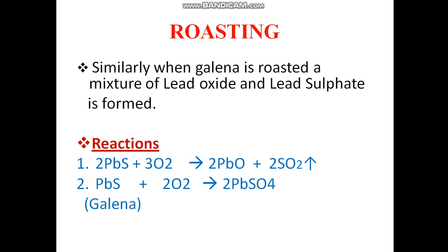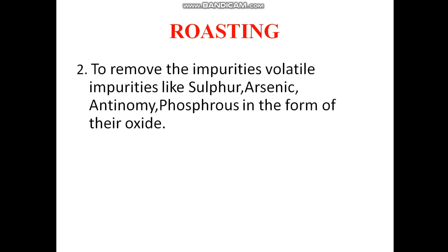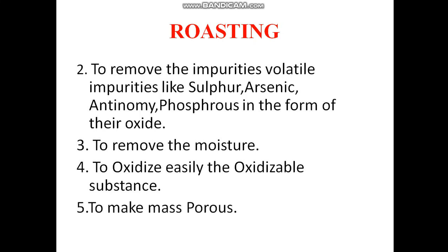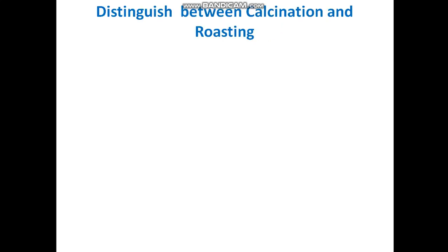The second purpose of roasting is to remove volatile impurities like sulphur, arsenic, antimony, and phosphorus in the form of their oxides. It also removes moisture. It oxidises easily oxidisable substances. Finally, it makes the mass porous.